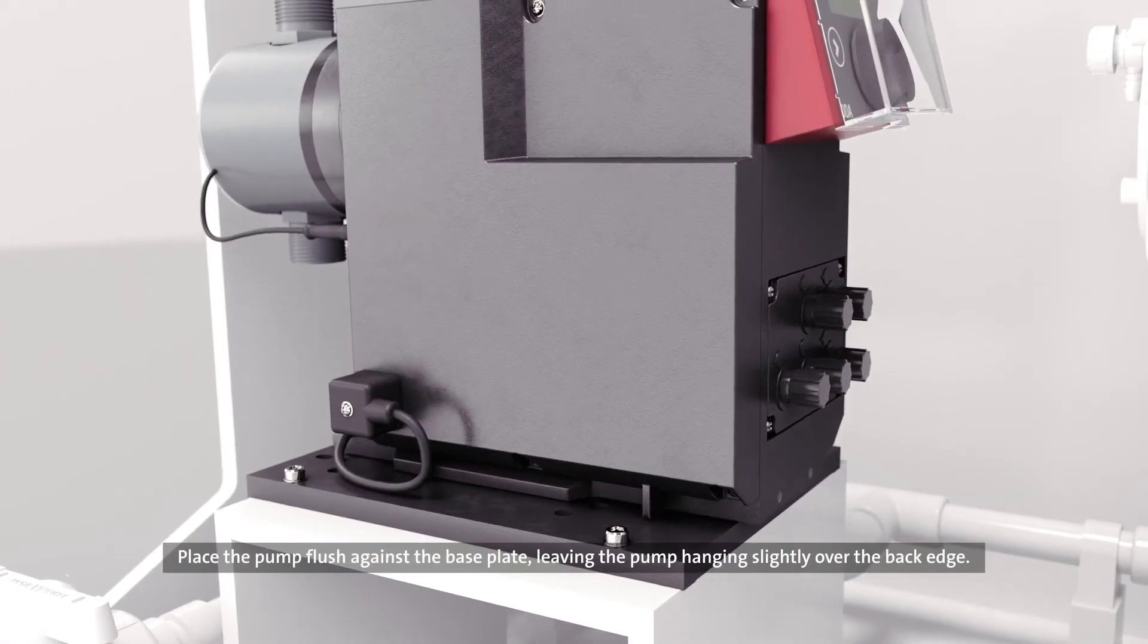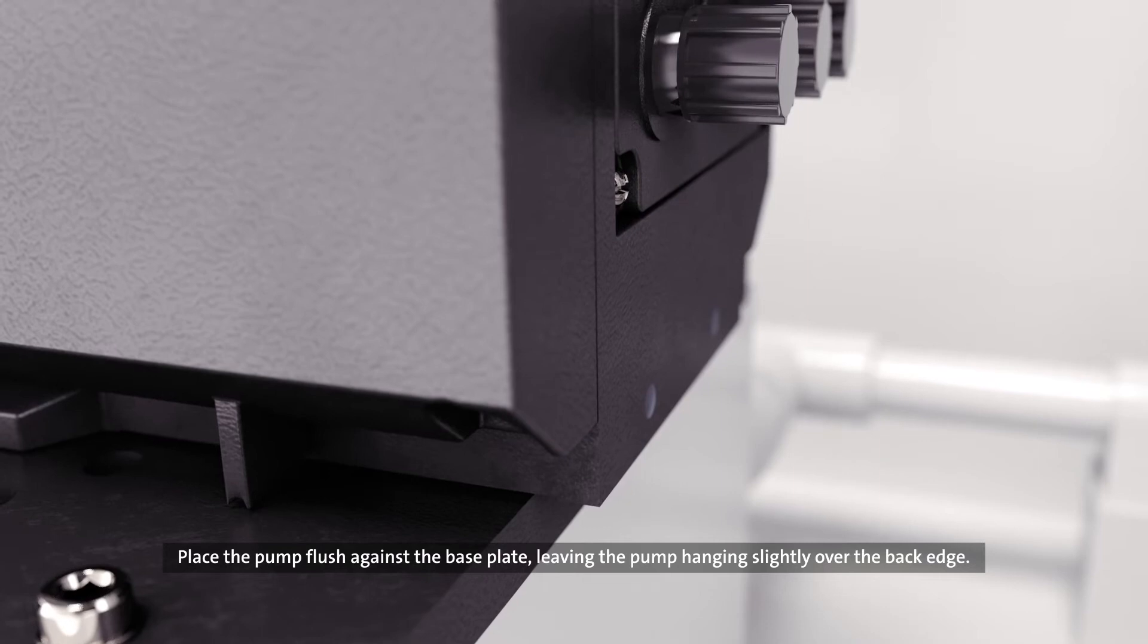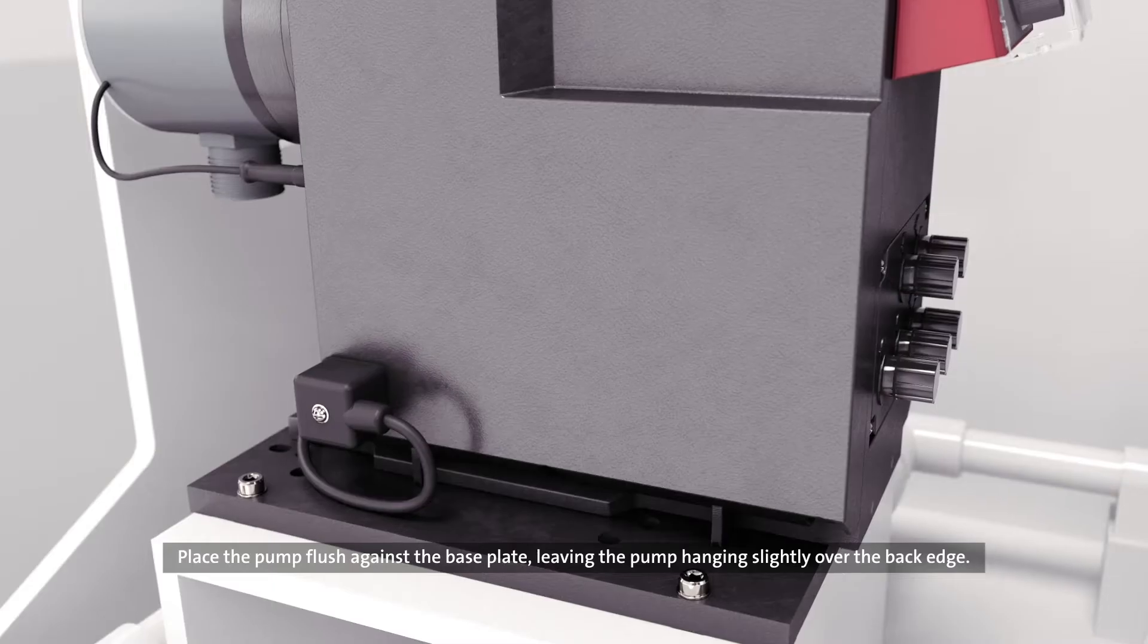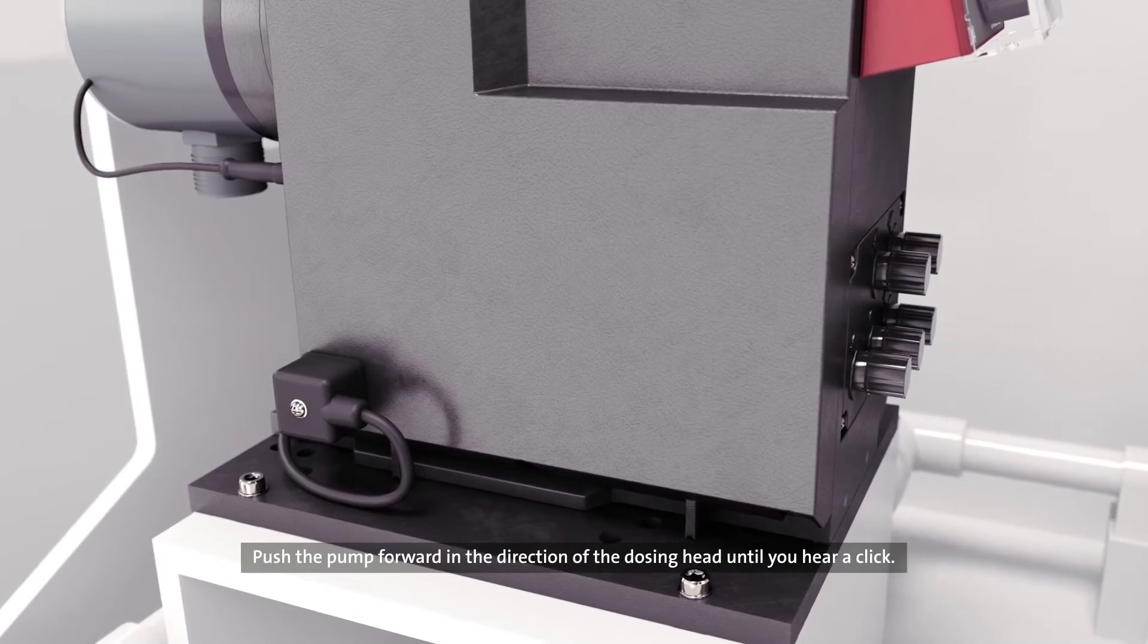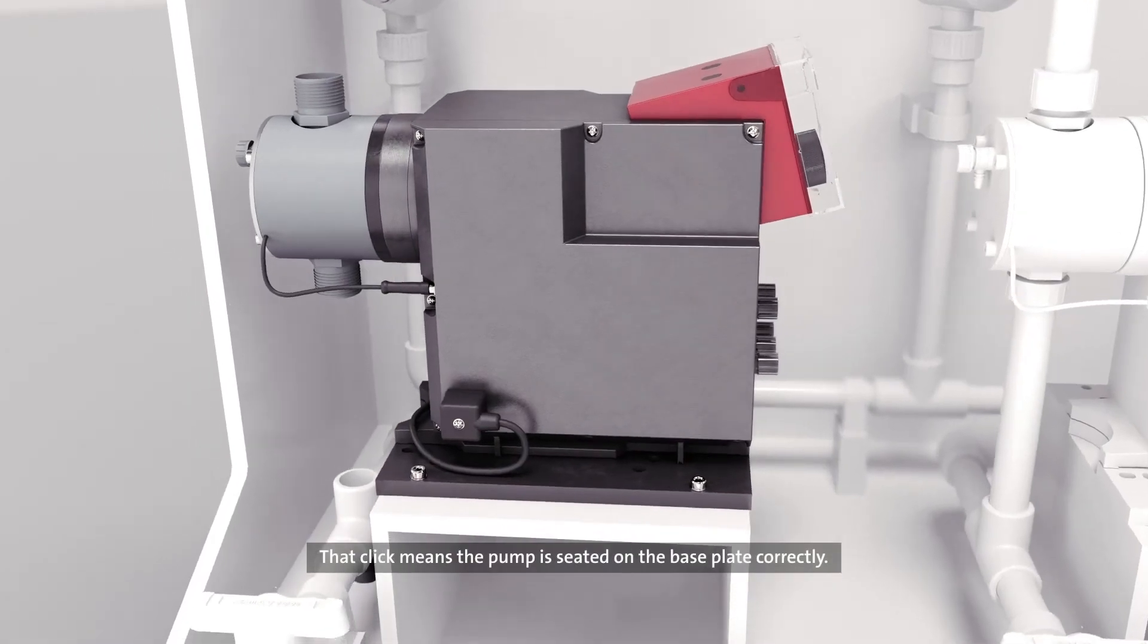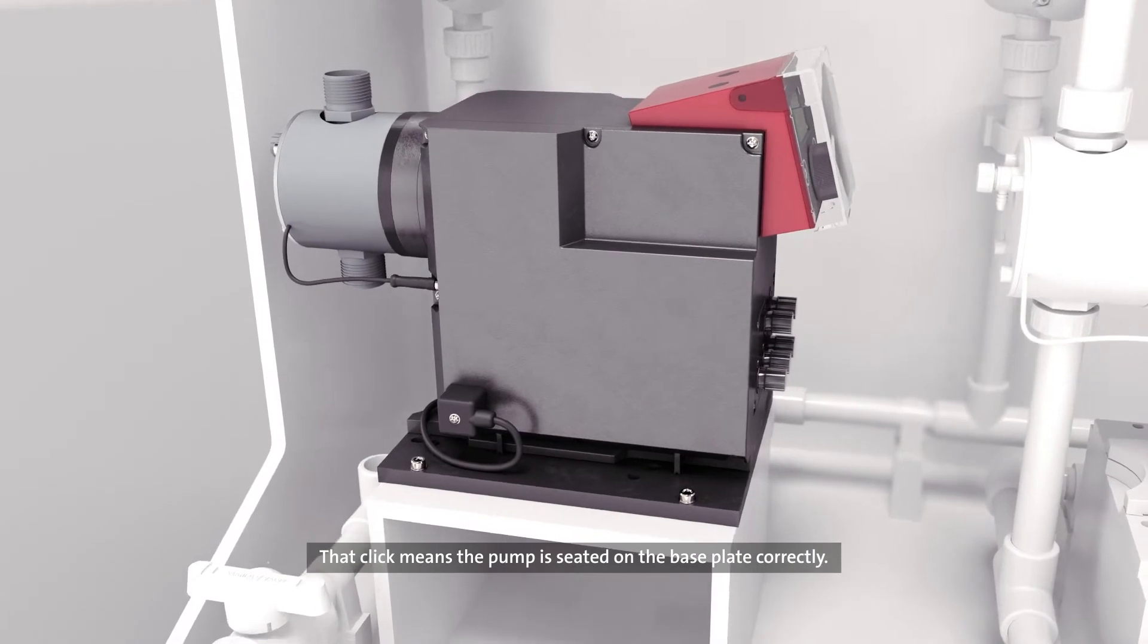Place the pump flush against the base plate, leaving the pump hanging slightly over the back edge. Push the pump forward in the direction of the dosing head until you hear a click. That click means the pump is seated on the base plate correctly.